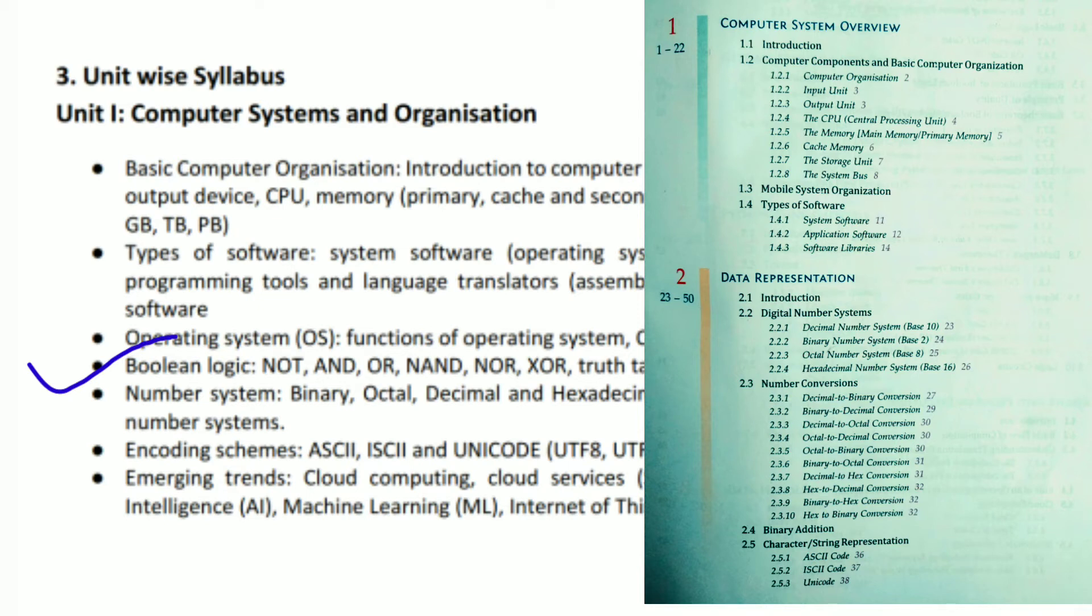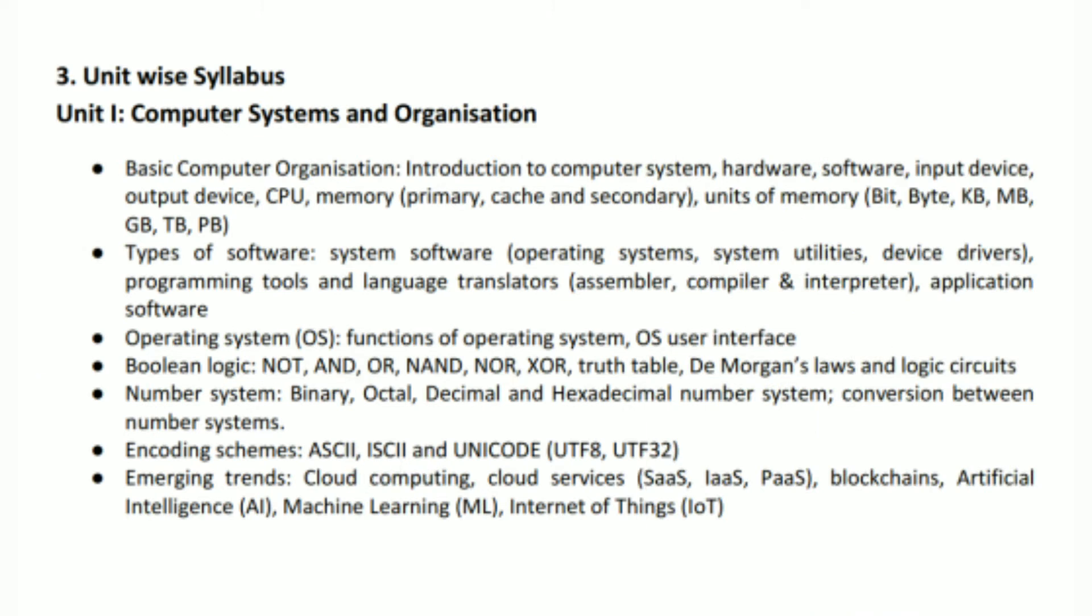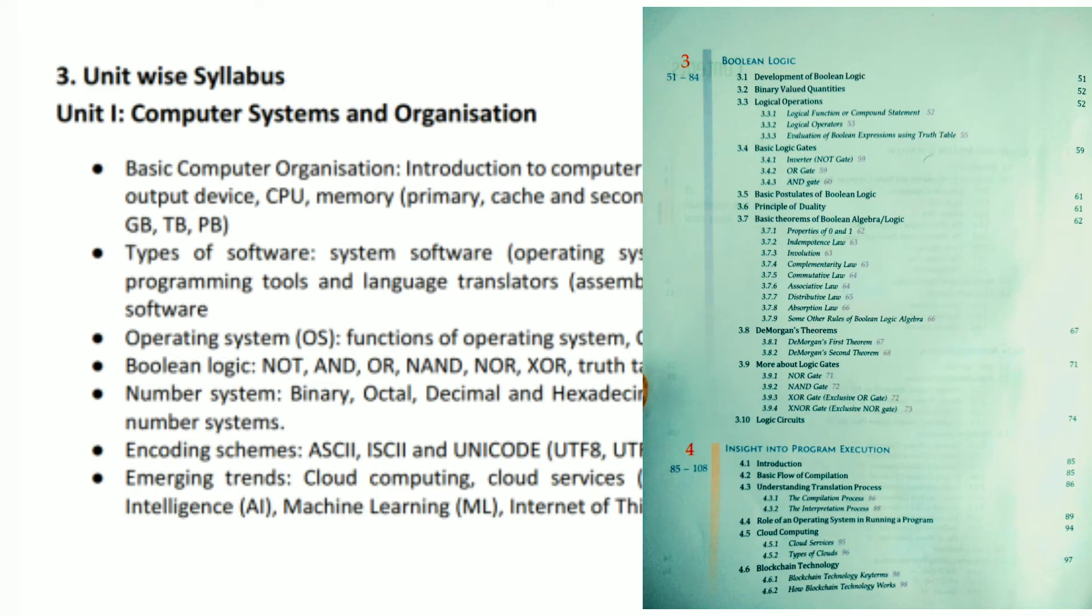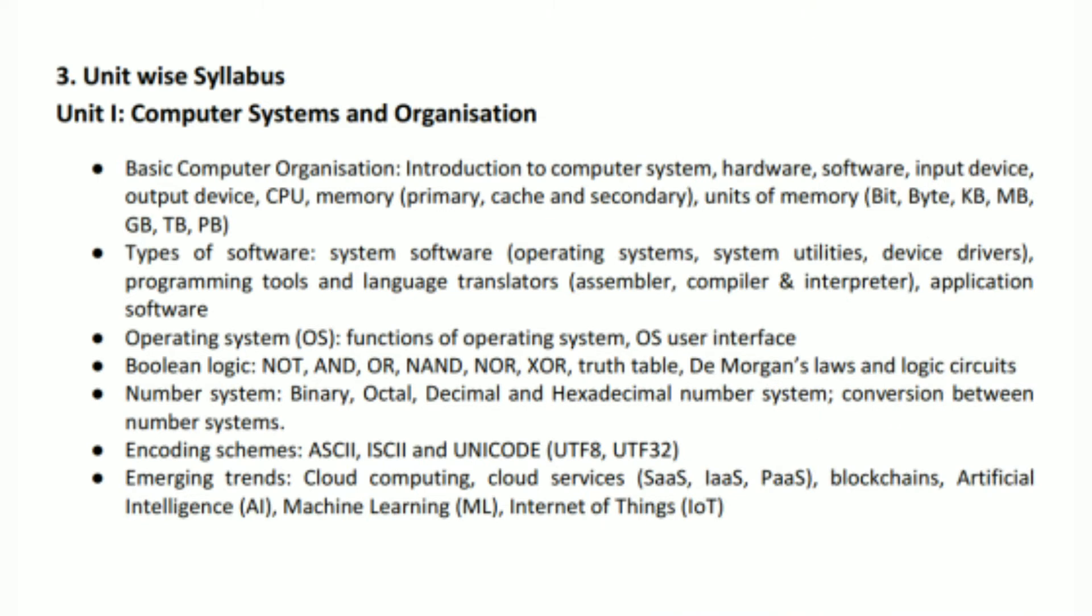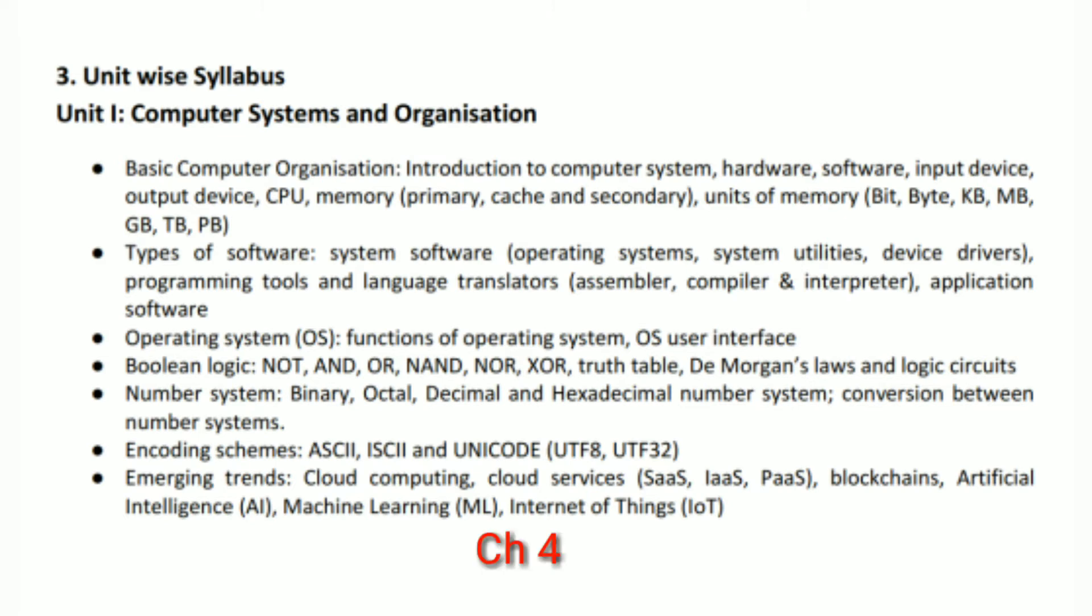What about point number 4? Boolean logic is of chapter number 3. And number system and encoding schemes are of chapter number 2, Data Representation. In Data Representation, all the number conversions as well as encoding schemes you will be getting in chapter 2. When we talk about Boolean logic, then NOT, AND, OR gates, truth tables, De Morgan's Theorem are available in chapter number 3. In chapter number 4, that is Inside the Computer Program Execution, you will be getting emerging trends like cloud computing, cloud services. So Unit 1 will occupy four chapters in your book.